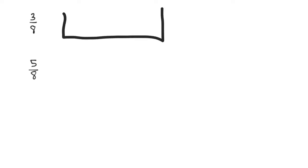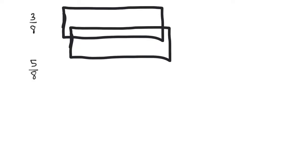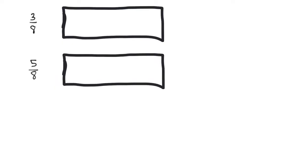We're going to start by drawing two identical rectangles. Now I have two identical rectangles. Let's draw what 3/8 looks like. I'm going to cut it into 8 pieces — there's my 8 pieces — and 3/8 would look like 1, 2, 3 shaded in.